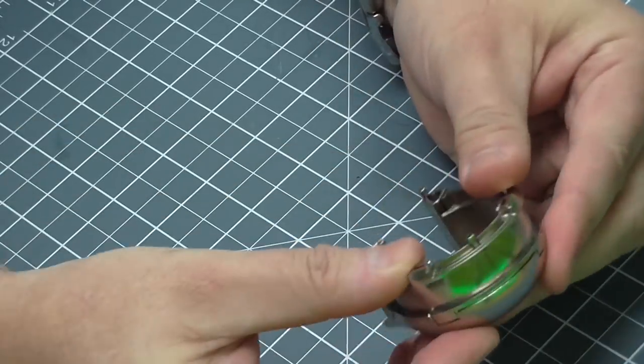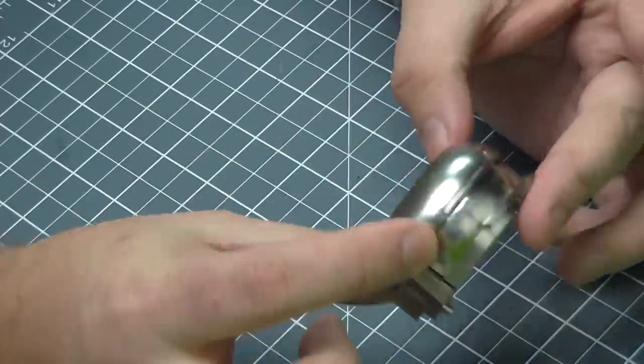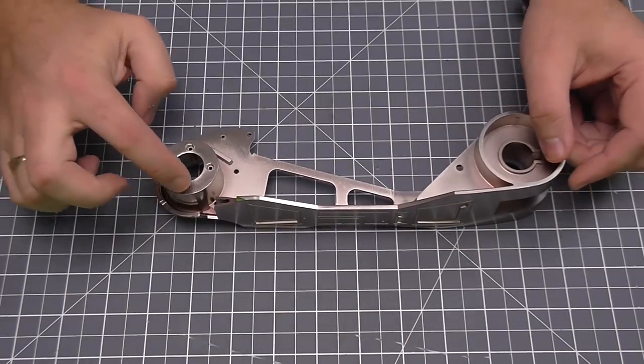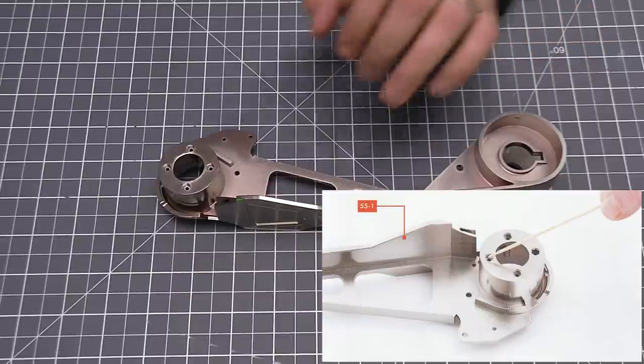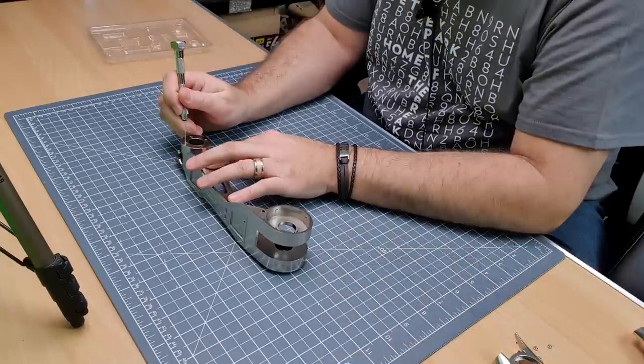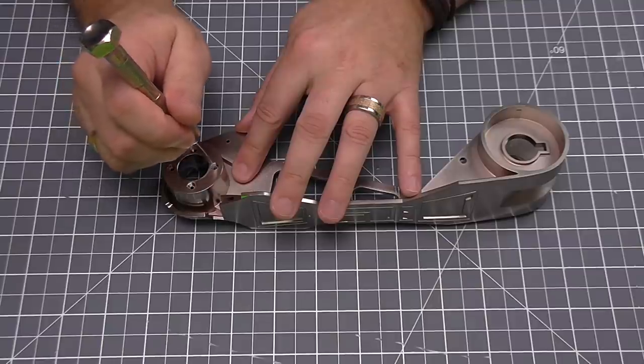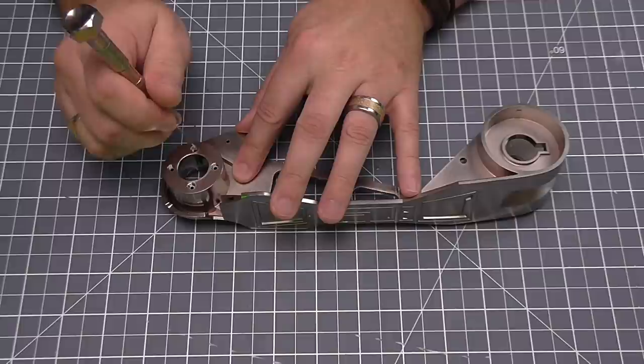There we go and push that into place and that is that section completed. Then we need to bring over the right section here. We're going to be putting nuts into each of these four holes here. Now the nuts are going to need to stay in place all by themselves so once again I'm just putting the tiniest bit of glue just around the middle there so once these nuts are in they're not going to move when we put a screw in from the other side.